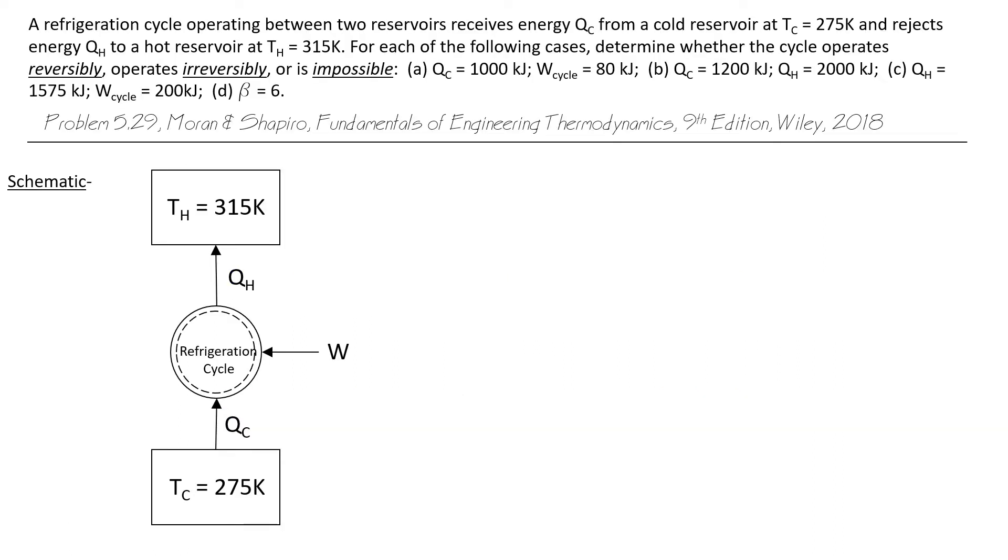A refrigeration cycle operating between two reservoirs receives energy QC from a cold reservoir at TC equals 275K and rejects energy QH to a hot reservoir at TH equals 315K. For each of the following cases, determine whether the cycle operates reversibly, operates irreversibly, or is impossible. We're given four separate cases to evaluate.